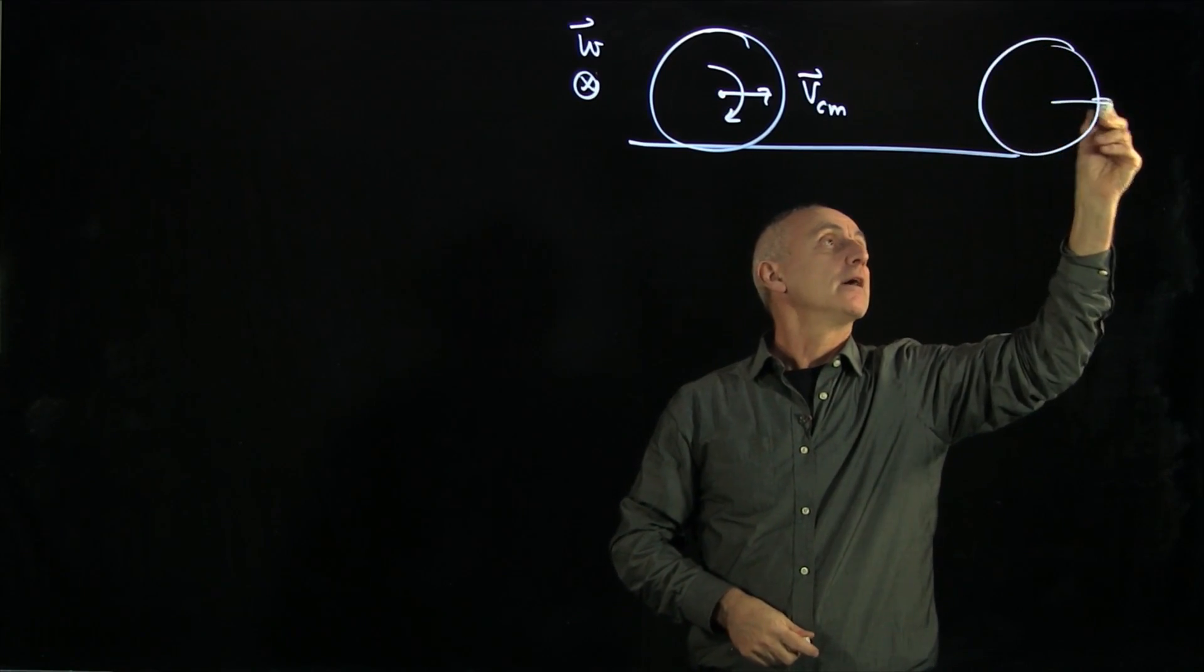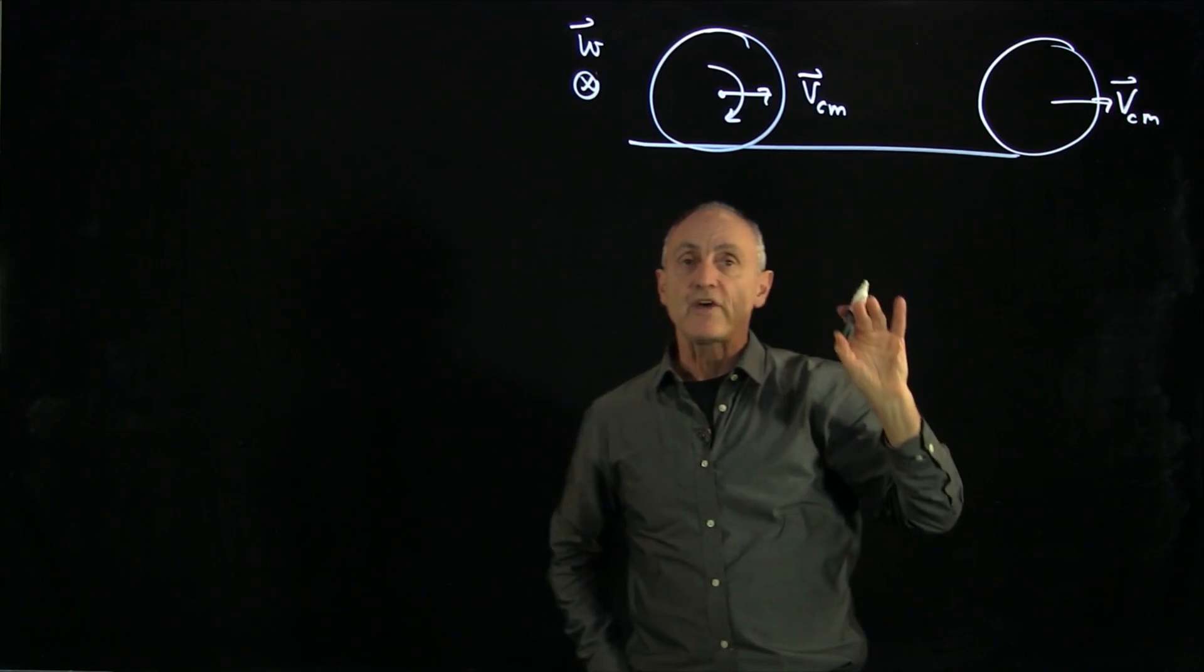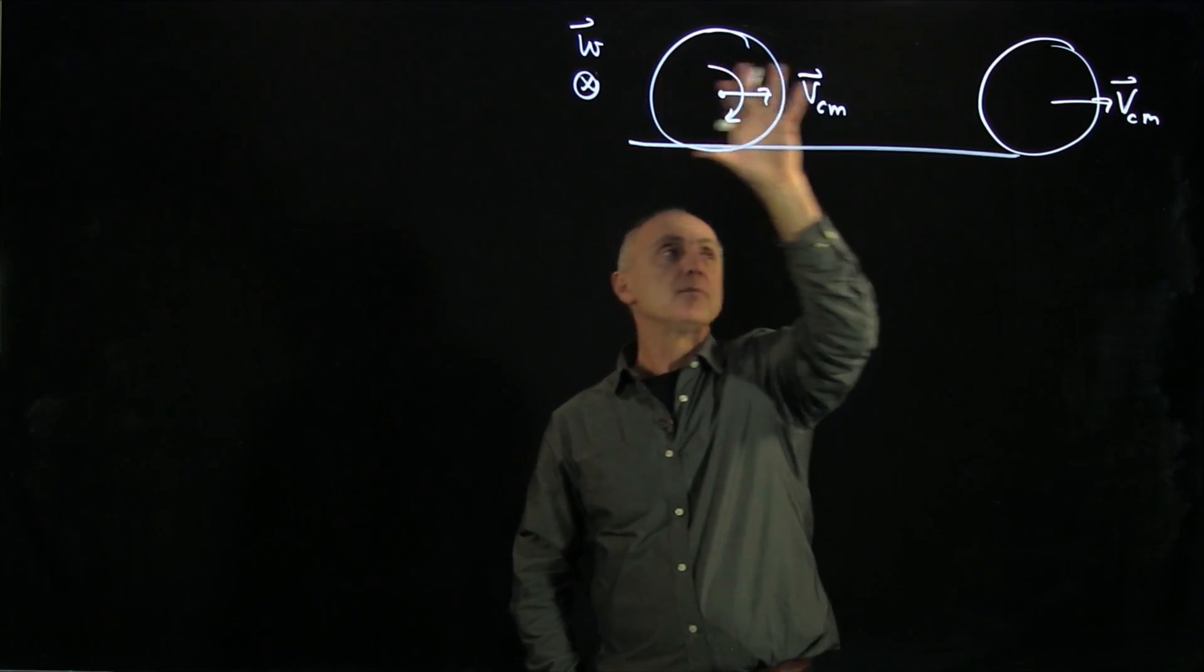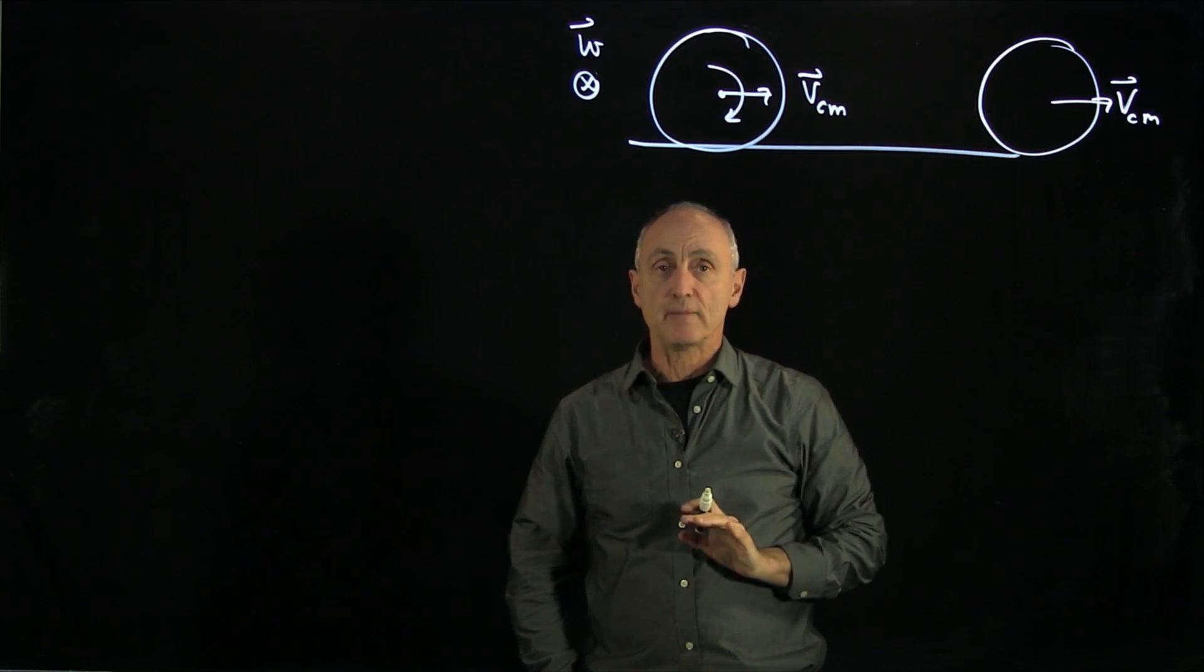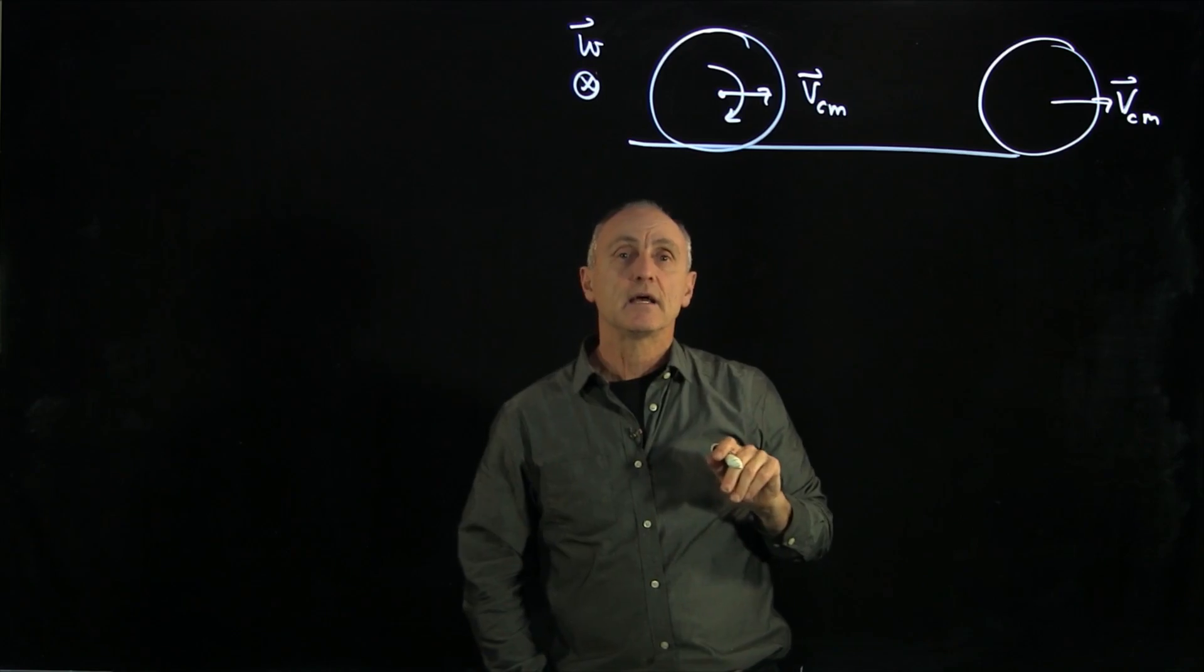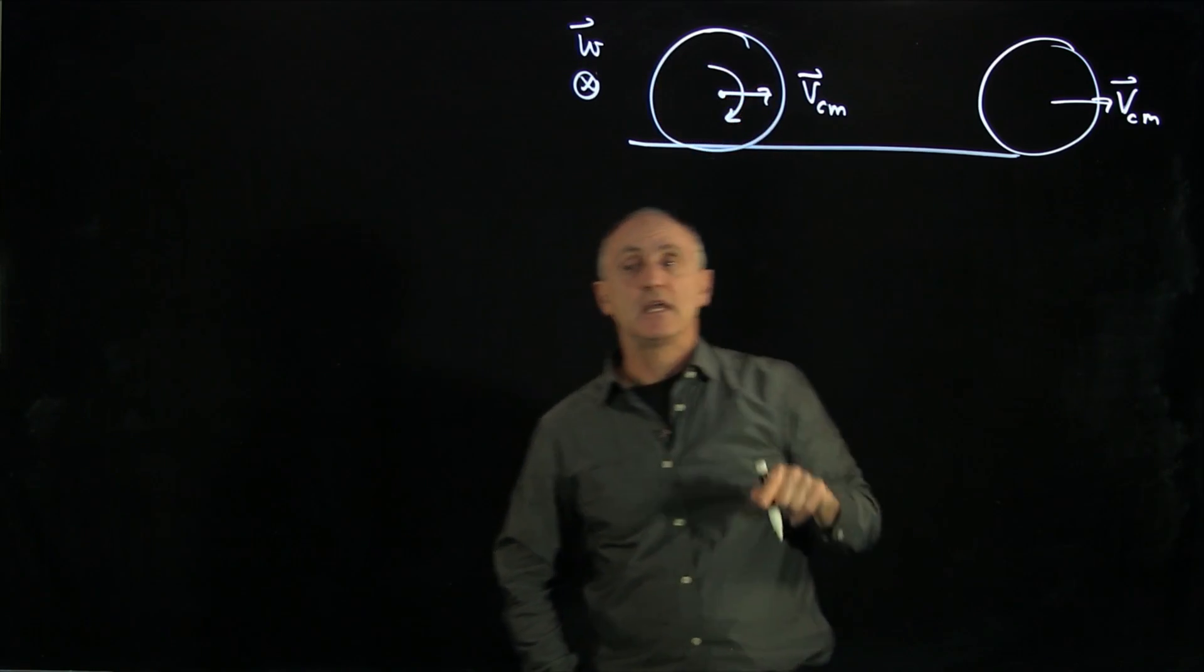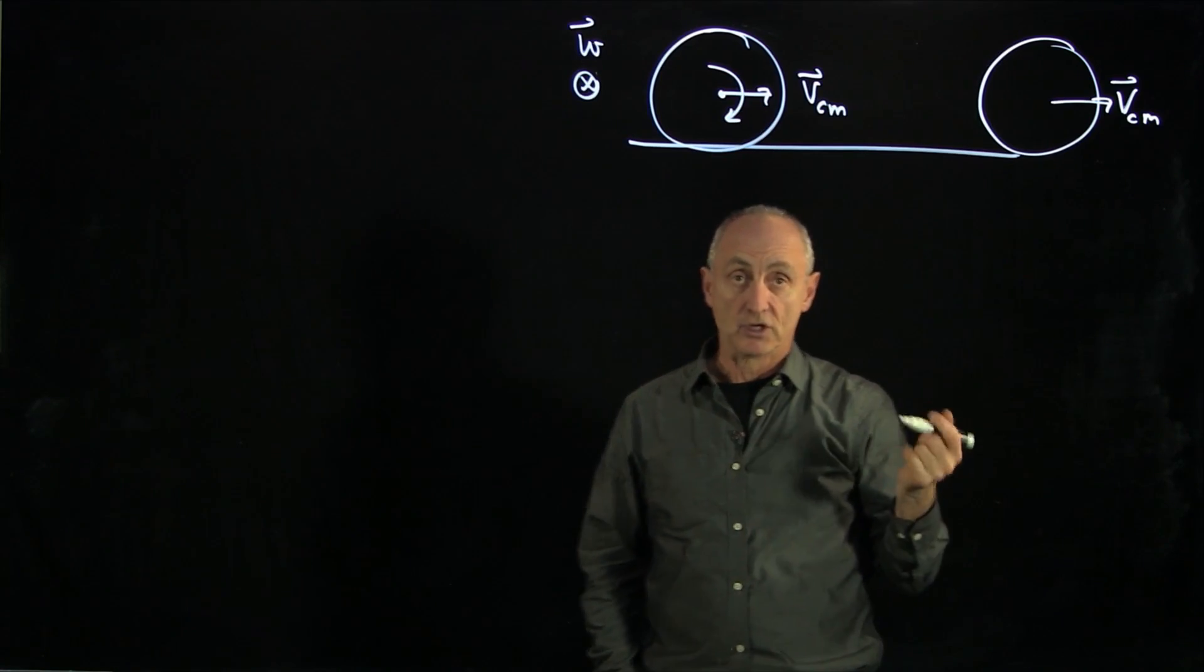A little bit later on, that body has moved some distance. And what we want to consider is the fact that not only is every point in the body moving with the center of mass speed, but there's this additional rotational energy that's associated with the fact that every point in the center of mass reference frame is undergoing circular motion.